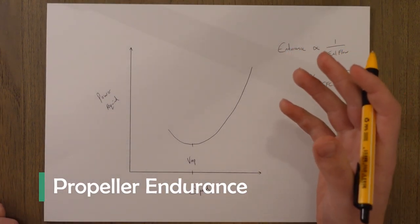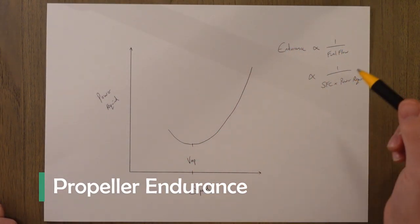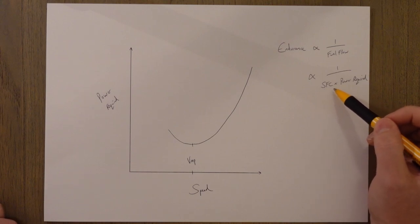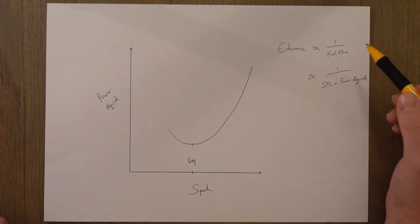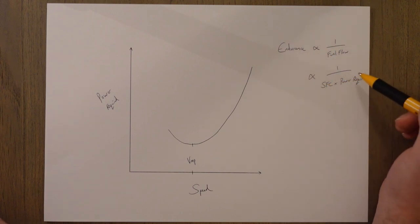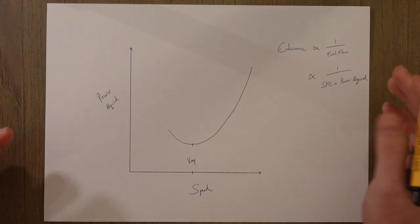Propeller endurance is very similar but because we're talking about propellers fuel flow is equal to specific fuel consumption times power required. This means our equation becomes endurance varies according to one over SFC times power required.